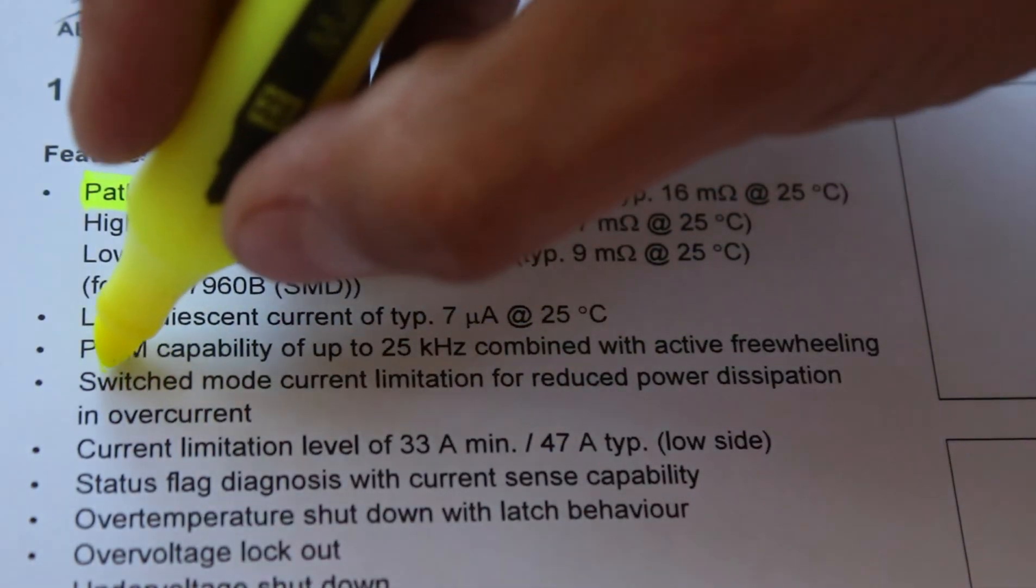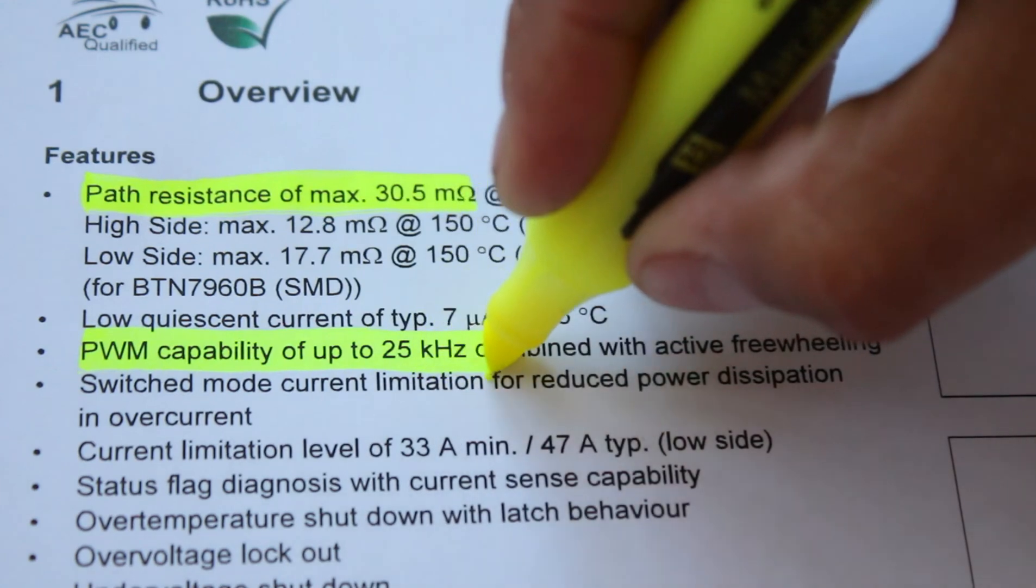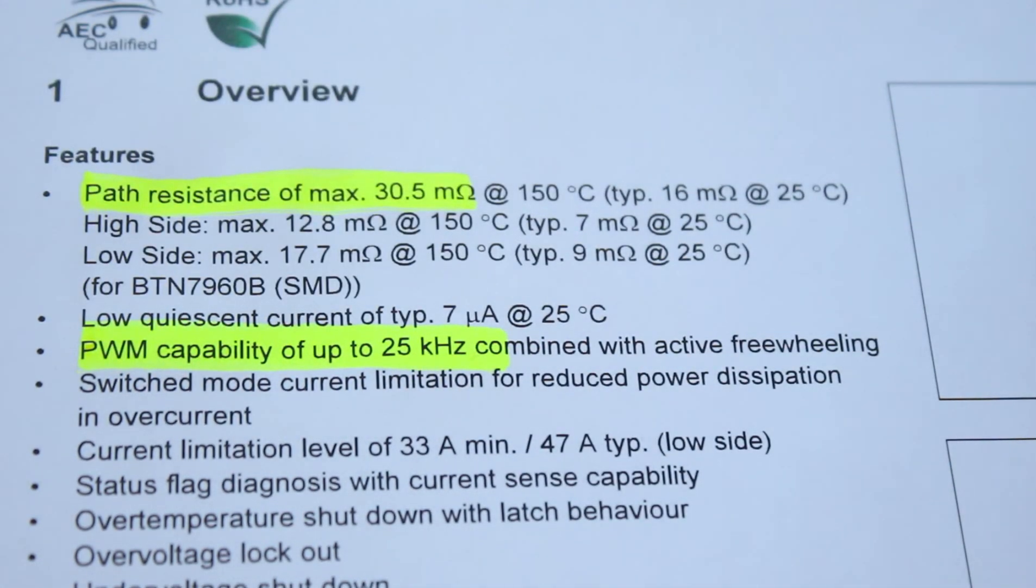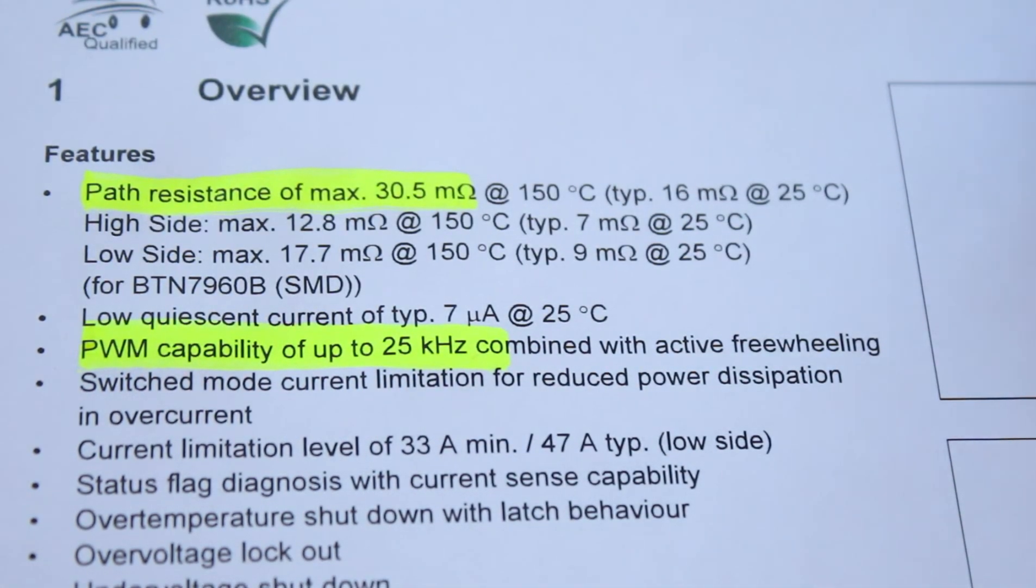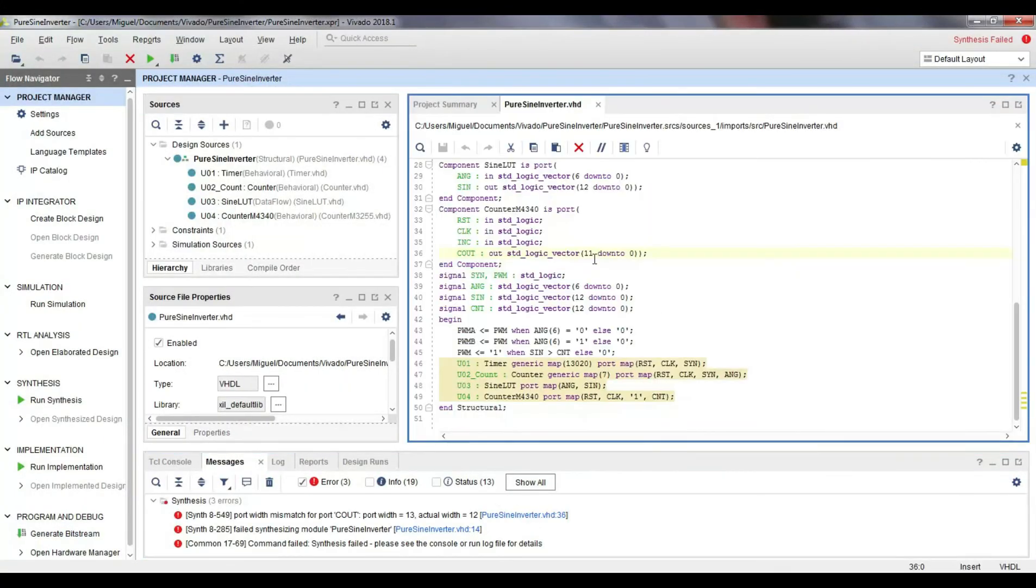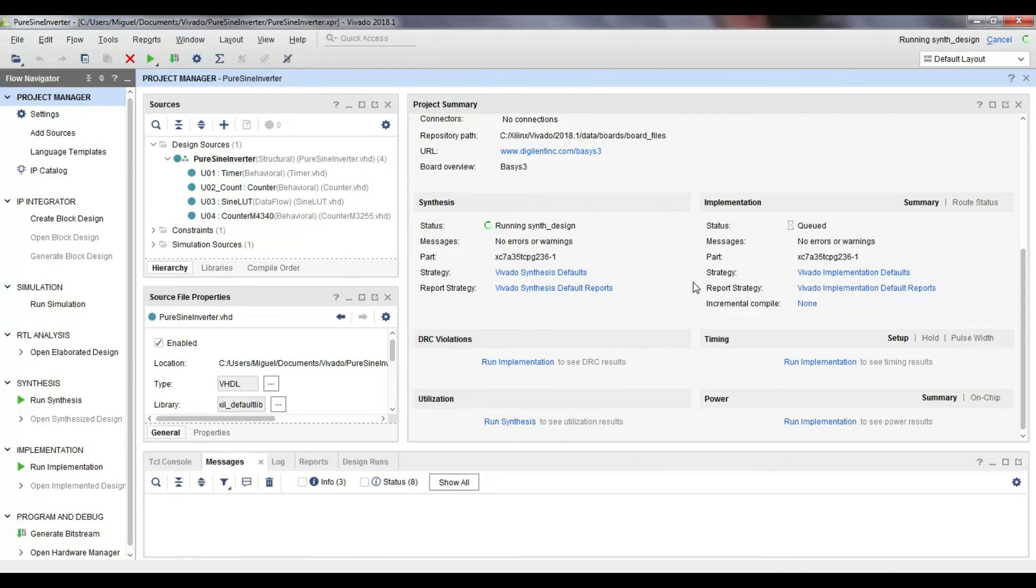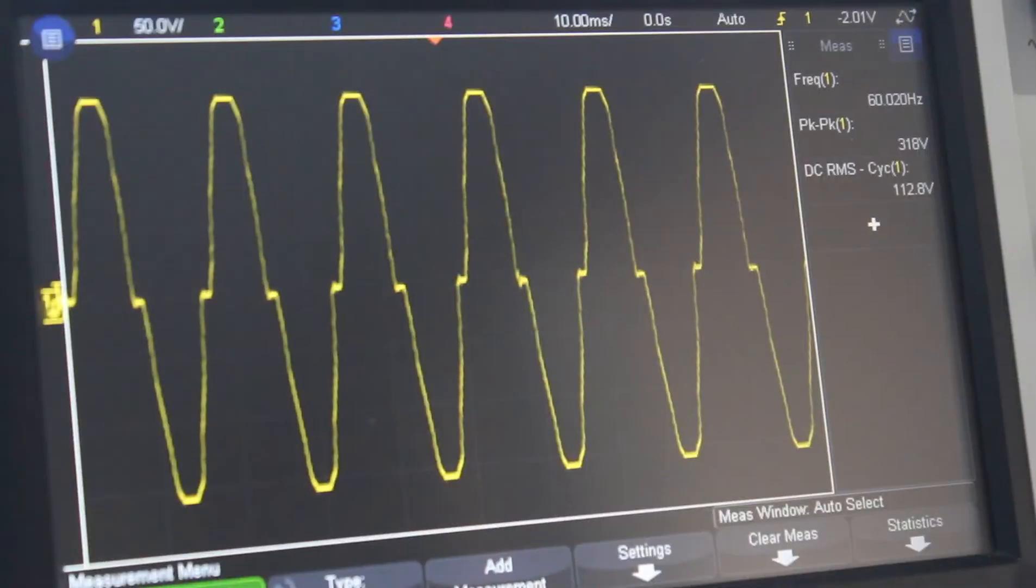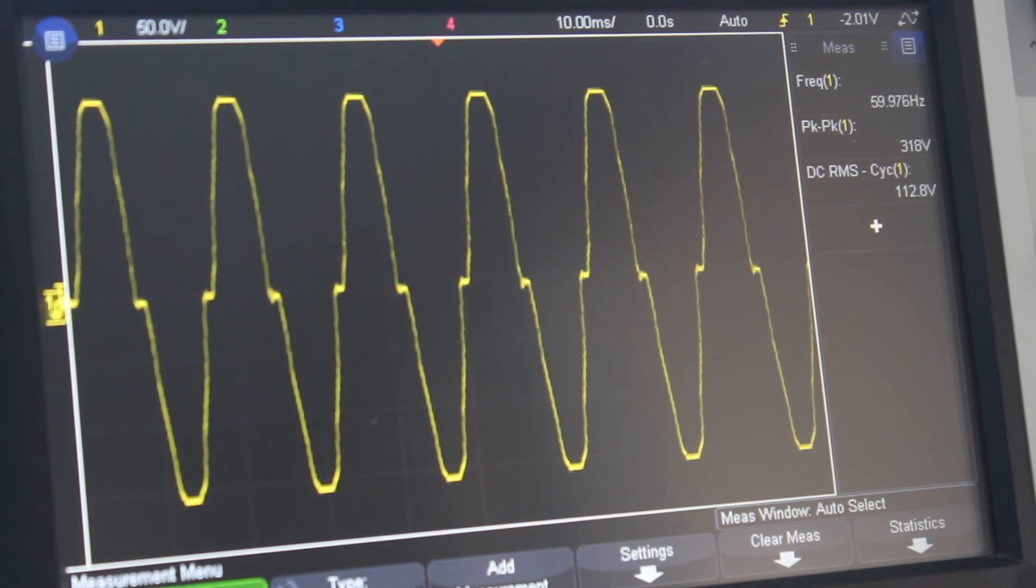Once again, I check the BTN7960 datasheet to discover that the maximum supported frequency is 25kHz. Then, I change the sine lookup table and the special purpose counter in such a way to have a PWM frequency of around 23kHz. But only to discover that the zero-crossing sections of the sine wave are still flawed.